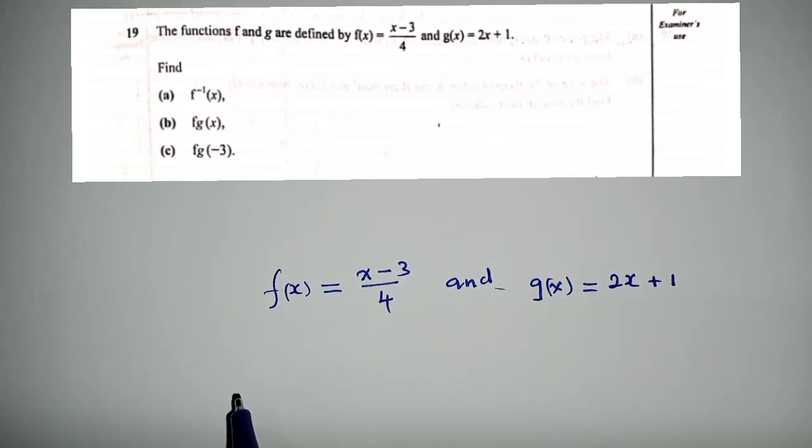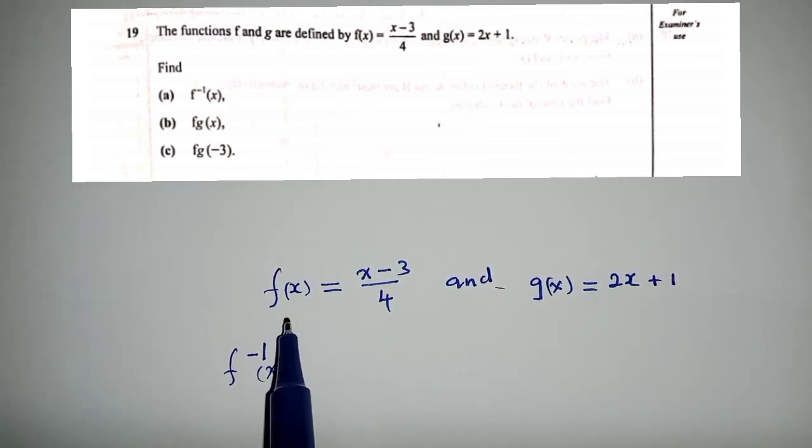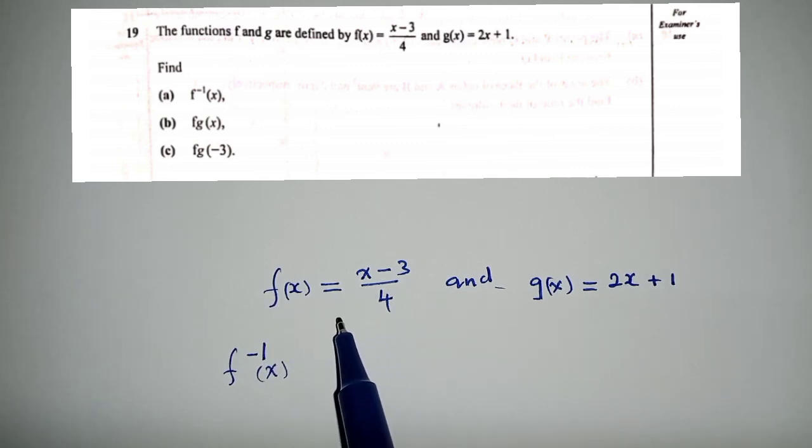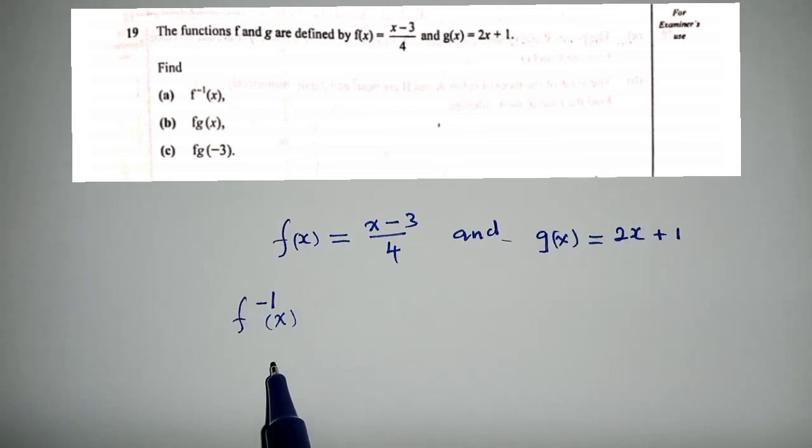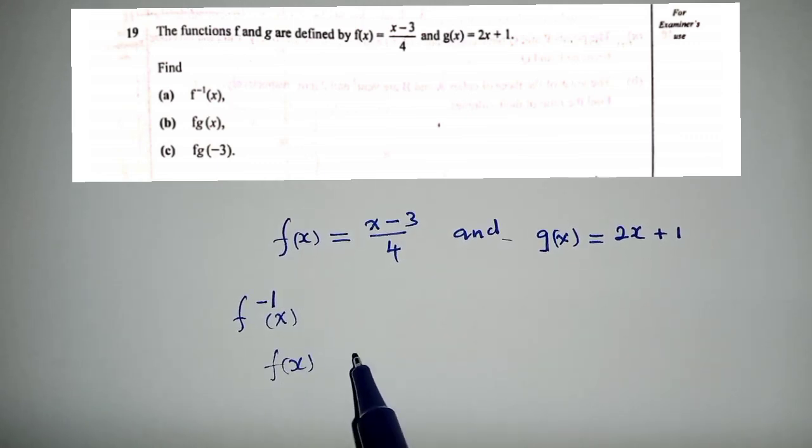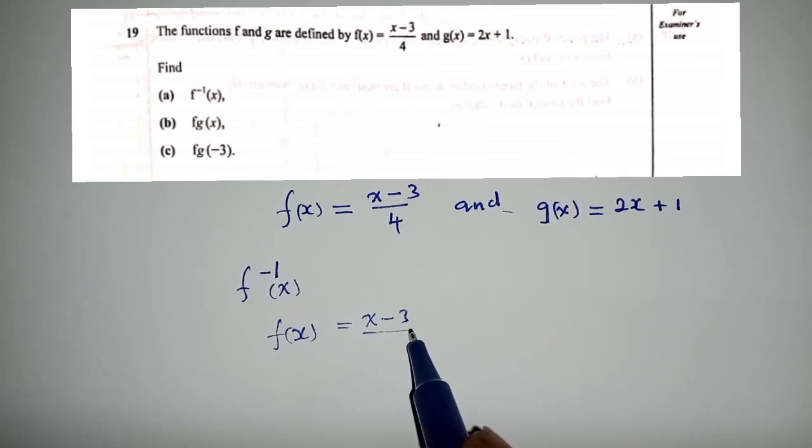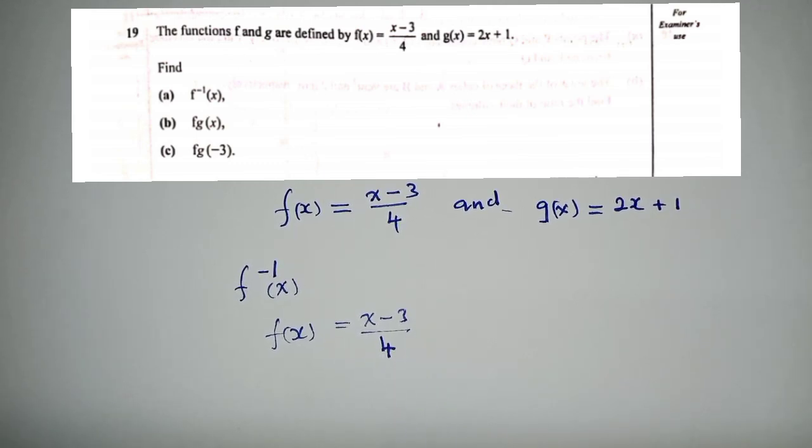Now, since they want us to find f^(-1)(x), we check which one between the two functions has got f. It's this one, f(x). So we get that function f(x) = (x - 3) / 4. Now we replace f(x) with y.